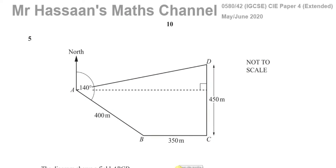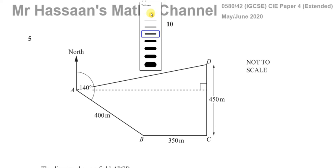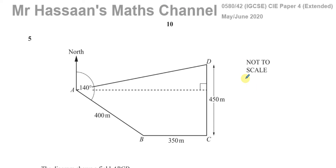Welcome back to Mr. Hassan's Math Channel. I'm now going to answer question number five from the May-June 2020 IGCSE Cambridge paper 4 variant 2. This question is about trigonometry and it was requested by one of the viewers, so I'm going to go through it.